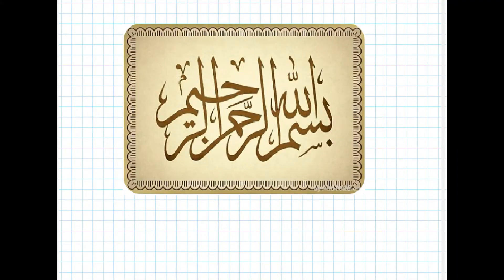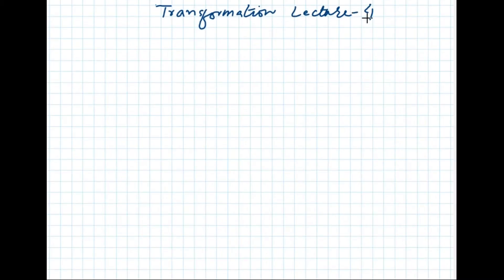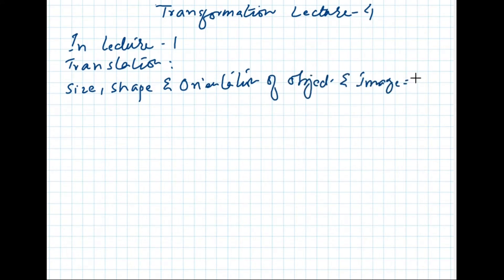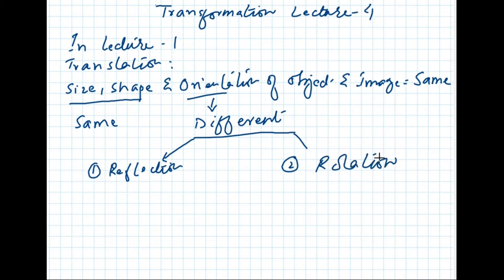Bismillahirrahmanirrahim. Today we will discuss more about transformation. This is our lecture number four. In lecture one we discussed translation, in which size, shape and orientation of object and image are the same. If the size and shape are the same but orientation is different, then there are two possibilities: number one, reflection, or number two, rotation. So in lecture four we will discuss reflection.